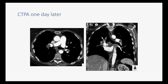This patient had a CTPA one day later. I'm not sure why they got that — I think they weren't 100% convinced that the VQ scan was true. So they went ahead and got a PE study where you can clearly see intraluminal thrombi filling the distal left and distal right pulmonary arteries.